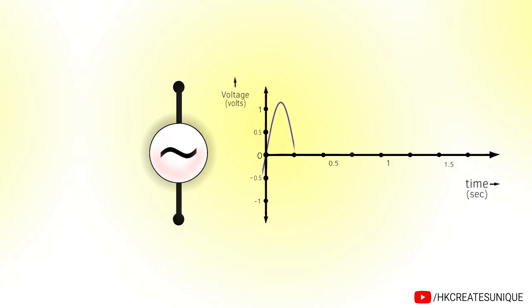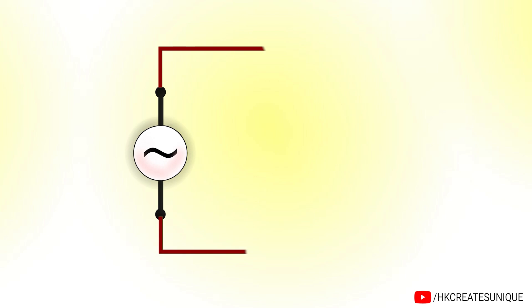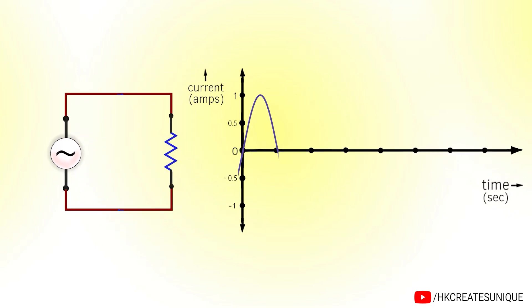This is the symbol for AC voltage source. It produces time varying voltage. When connected to a load, current flow alternates direction like this.